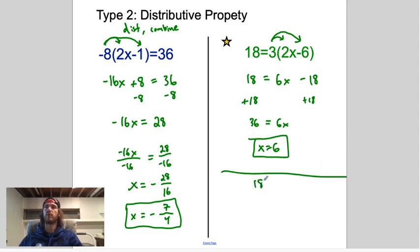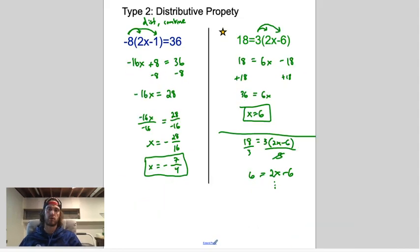Another way you can approach this problem, if you so choose, is you can actually divide by 3 in the very beginning. This times 3 divided by 3, the 3s go away, divide by 3 on this side, and you get 6 equals 2x minus 6, which will also lead you to the answer x equals 6. That'll be 2x equals 12, so on and so forth.